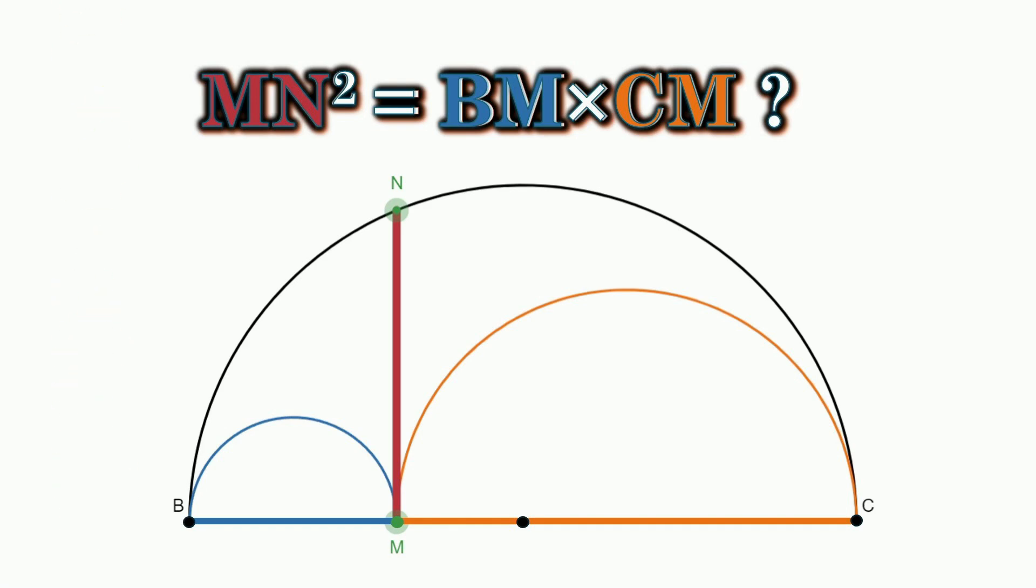Well, hello and welcome, everybody. We've got a cool question here today. It says right here, mn squared is equal to bm times cm. So that's this distance squared is the same as this times this. Let's explore that.